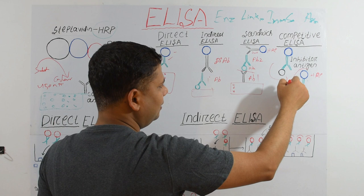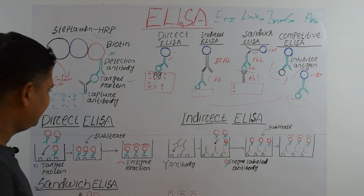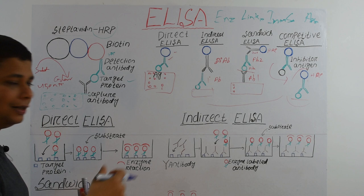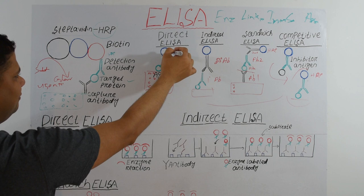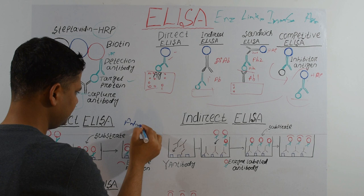Now we will learn each type in more detail. In Direct ELISA, we tag our antigen to the well and add an antibody conjugated with HRP. This is typically used in antigen screening.